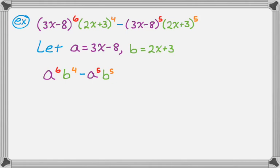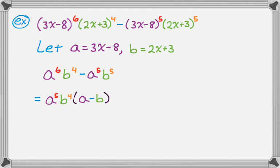I have a-type things and b-type things. I can take out a to the 5th because that's the smallest power of a, and b to the 4th is the smallest power of b. Now I've taken out all the a-type and b-type things, so I open parentheses and see what's left over. I took a to the 5th out of a to the 6th, leaving a to the 1st — just a. I took b to the 4th out of b to the 4th, leaving 1. Then minus: a to the 5th out leaves 1, and b to the 4th out of b to the 5th leaves just b.